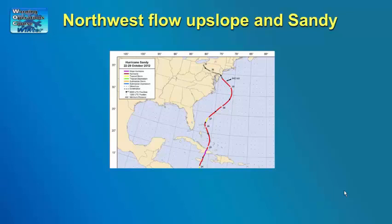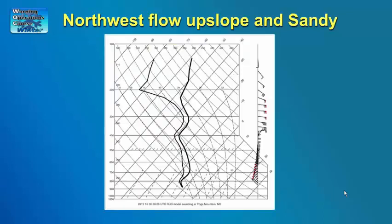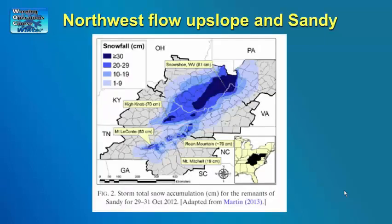Hurricane Sandy was an extreme example of this type of event, producing snowfall totals of over two feet in the mountains of West Virginia, North Carolina, and Tennessee. This image shows the track of Sandy along the mid-Atlantic coast. The sounding shows a layer of deep moisture at Roan Mountain on the North Carolina-Tennessee border during the event, and the observed snowfall over the southern Appalachians shows terrain-enhanced snowfall of over 20 centimeters covering a large area over the higher terrain from West Virginia down to North Carolina.